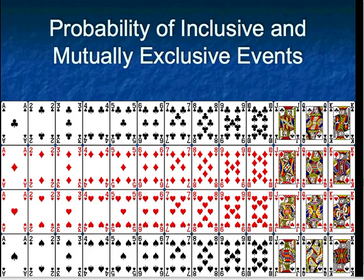There are four suits: clubs, diamonds, hearts, and spades. There are 13 cards in each one of them. Four times 13 is a total of 52. You may press pause if you'd like to study this page a little bit longer.